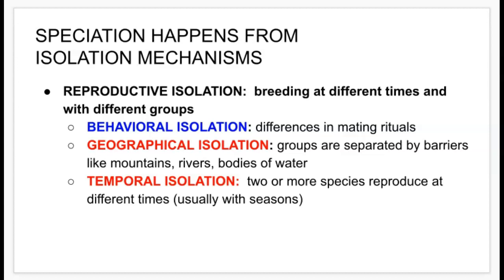Geographical isolation occurs when groups are separated by barriers like mountains, rivers, or bodies of water. Temporal isolation is associated with time — it could be day or night, or seasonal: spring, summer, autumn, or winter. In temporal isolation, two or more species reproduce at different times.